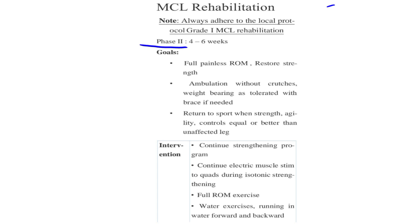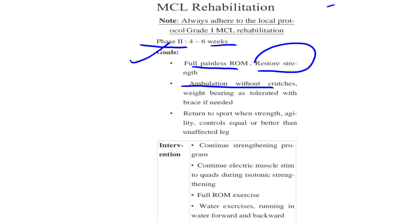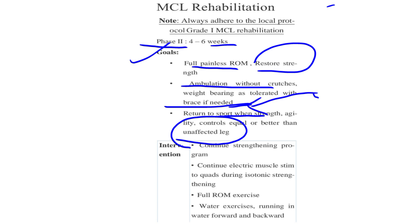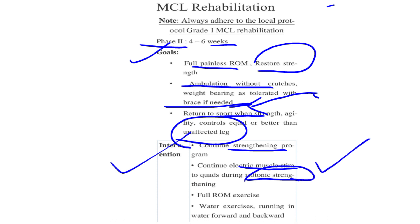In Phase 2 of Grade 1 MCL rehabilitation, spanning four to six weeks, the goals are pain-free range of motion, restored strength, and ambulation without crutches with weight bearing as tolerated. Return to sport is considered when strength, agility, and control are equal to or better than the unaffected leg. A brace may be used if needed. Interventions continue with electrical muscle stimulation to the quads and isotonic strengthening.